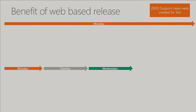With the old model, if we wanted to fix something we had to wait for a CU update. With the new model, we can deploy the hybrid app as many as four or five times a week — if we put a fix in, we test it and push it out.